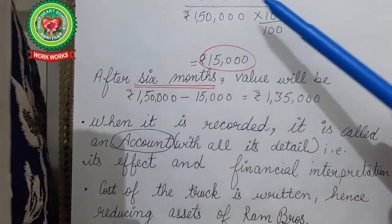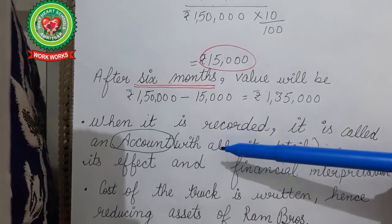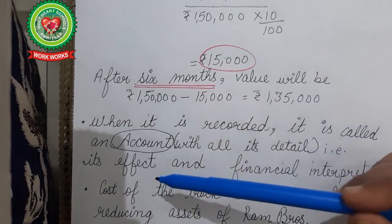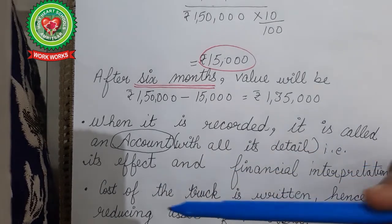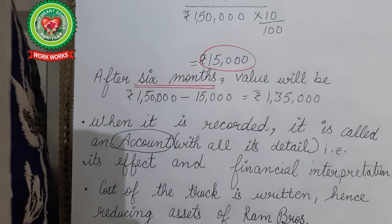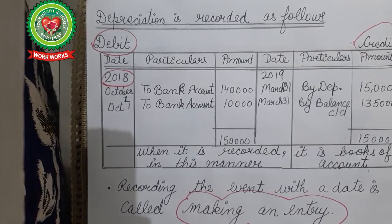When this is recorded, it becomes an account. We record all details along with financial interpretation — the cost of the truck is written down, thereby reducing the assets of Ram Brothers. So we have now covered two key terms: depreciation and account.